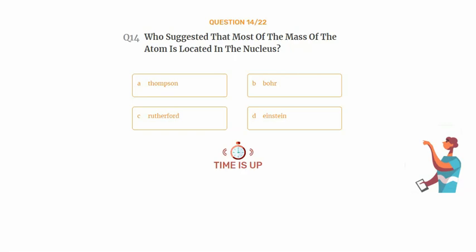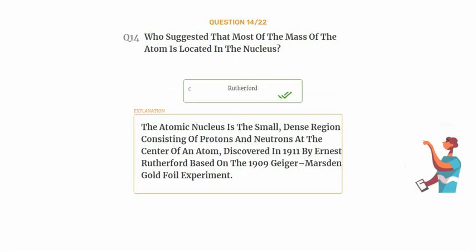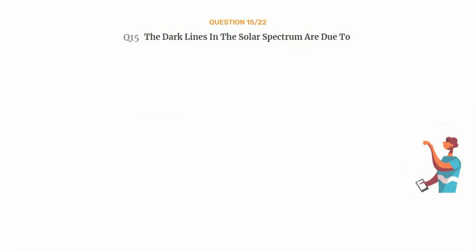The correct answer is Option C: Rutherford. The atomic nucleus is the small, dense region consisting of protons and neutrons at the center of an atom, discovered in 1911 by Ernest Rutherford based on the 1909 Geiger-Marsden Gold Foil Experiment.